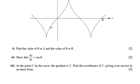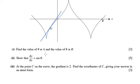So finally, part 3 says that at this point C on the curve, the gradient is 2. And it wants us to find the coordinates of C and give the answer in exact form. So it's kind of a back-to-front question.